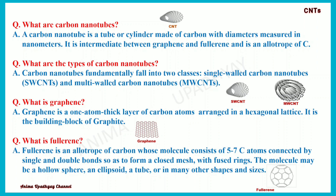What are the types of Carbon Nanotubes? Carbon Nanotubes fundamentally fall into two classes: single-walled carbon nanotubes, abbreviated as SWCNTs, and multi-walled carbon nanotubes, abbreviated as MWCNTs. With the help of images, I have tried to show you the SWCNT and MWCNT.